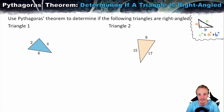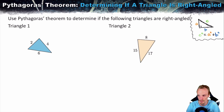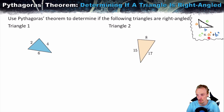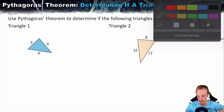This is a really quick process once you know what you're doing. What we know about Pythagoras theorem is: if the triangle is right-angled, the area of the longest side squared is going to be equal to the areas of the two shorter sides squared added together. If this is true, the triangle has to be right-angled. If it's not true, then the triangle is not right-angled.